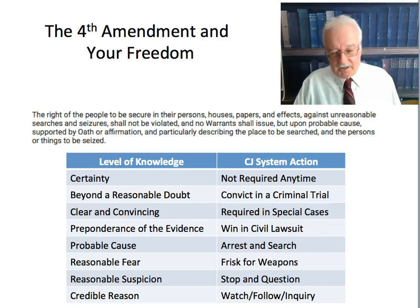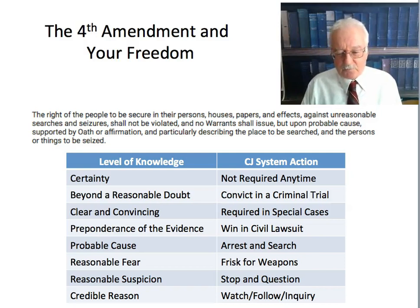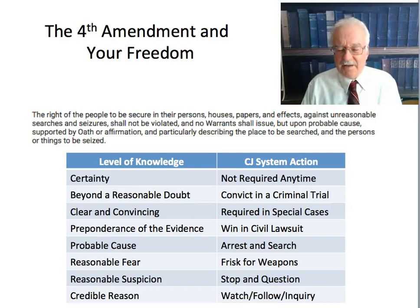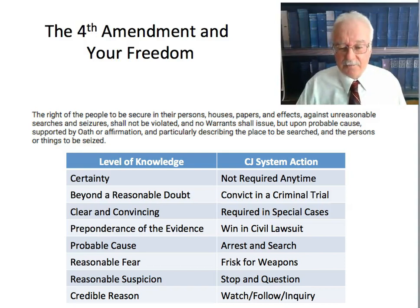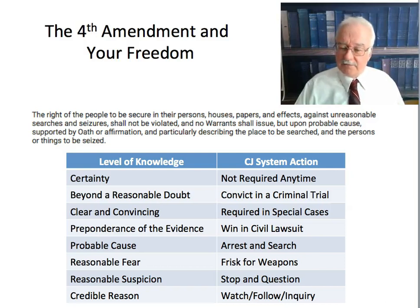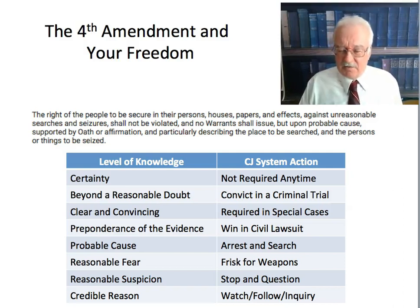With probable cause, you can arrest and search. Preponderance of the evidence — a majority of the evidence, 51% — is the level of proof a civil court jury needs to decide in your favor in a civil lawsuit, such as suing for damages. Clear and convincing evidence is a higher level of proof — not beyond a reasonable doubt, but more than preponderance — and it is occasionally used in criminal law and other types of law.